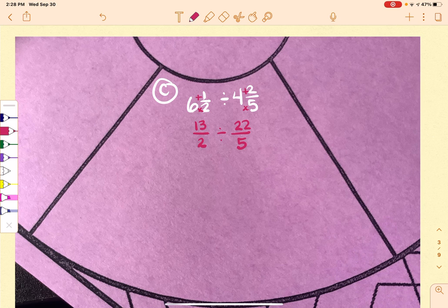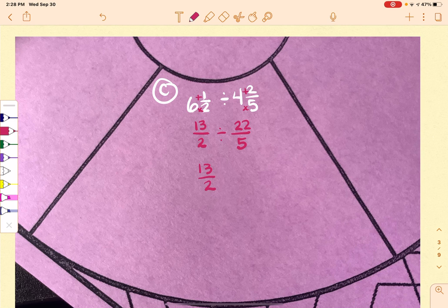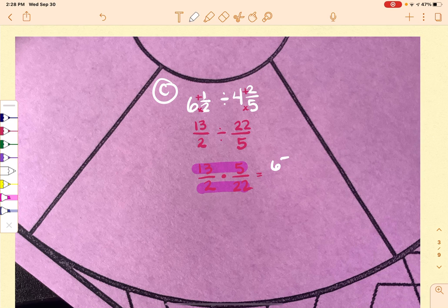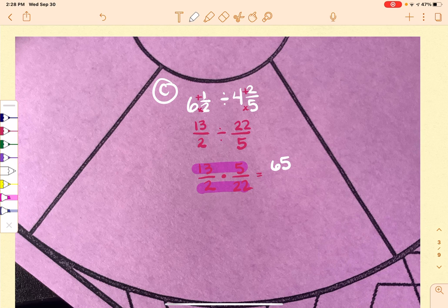So now we have it set up with everything kind of in the right spot. Okay, now I'm going to do keep, change, and flip. And now I can go ahead and multiply across. So on the top I have 13 times 5, which is going to give me 65. And then on the bottom I have 2 times 22, which is 44.